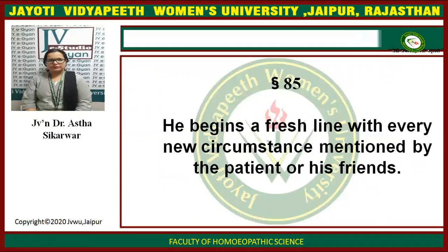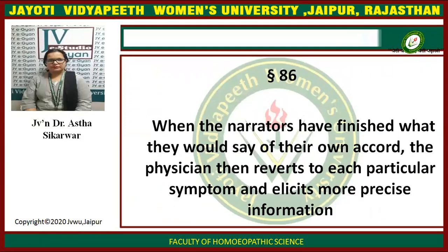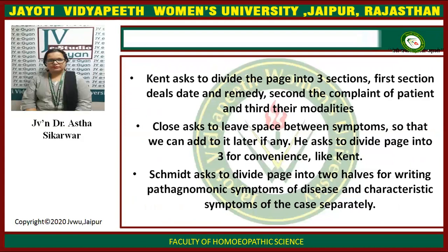In aphorism number 85, Dr. Hahnemann says the physician should begin a fresh line with every new circumstance mentioned by the patient or his friends. Aphorism number 86: Dr. Hahnemann says when the narrators have finished what they would say of their own accord, the physician then reverts to each particular symptom and elicits more precise information. Once the patient has finished his symptoms, the physician should go back to symptom number one and start from there. Stuart Claus asks to leave space between symptoms so that we can add to them later if needed.